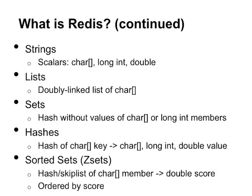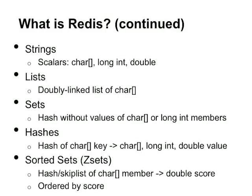Let's get into some of the structures and what they support. Starting with strings — strings are actually not just plain character strings. You can certainly use character strings, but strings can also represent long integers: 32-bit on 32-bit platforms and 64-bit on 64-bit platforms. These are signed integers, and if you try to increment over the maximum positive integer or decrement below the negative integer limit, it will give you a warning and won't do it, so you don't get any overflow or underflow issue.